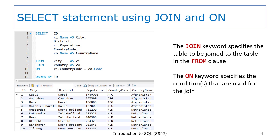First, look at the result set. You'll see that it includes all of the data in the city table and it also includes the country name. Keep in mind that the country name value is in the country table, so what we are seeing here is a result set that includes data from two tables. Notice that when the country code value changes, the country name value also changes. In this result set, there are two country codes: AFG for Afghanistan and NLD for Netherlands.